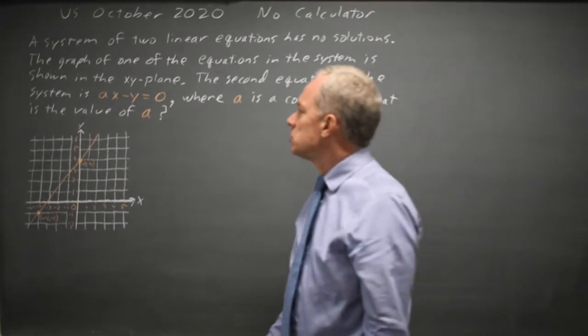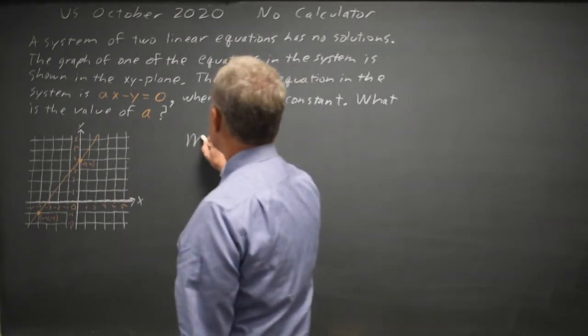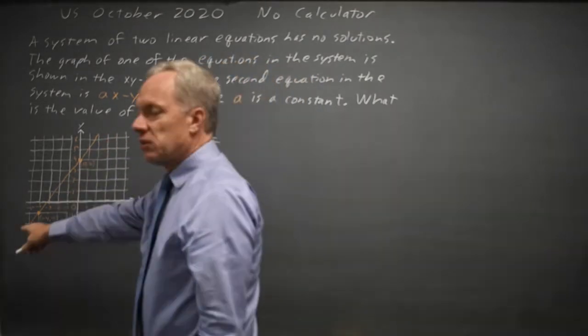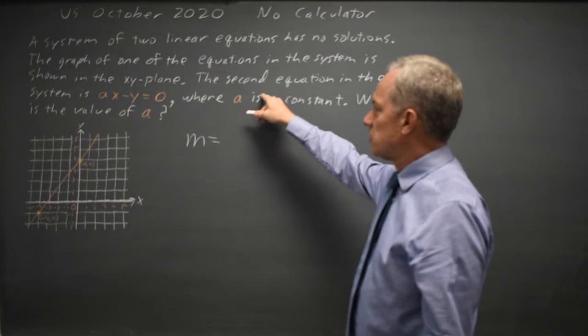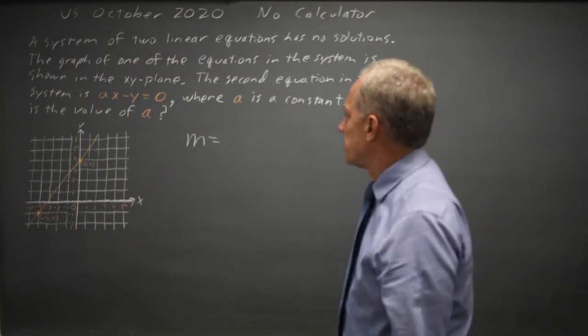They have the same slope. So if I find the slope of the line they've graphed, I'll find the slope of the second equation not shown and that will help me to answer the question.